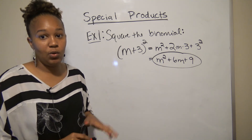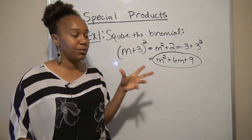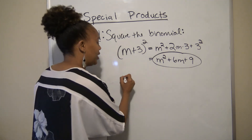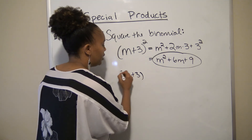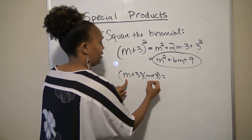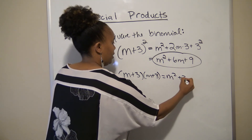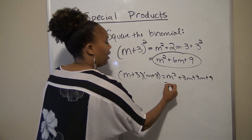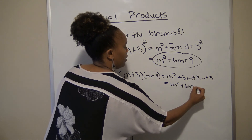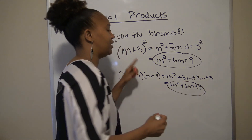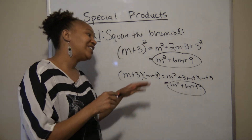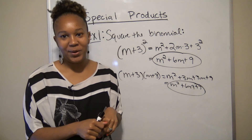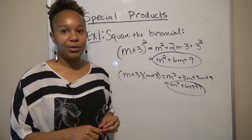If you can't remember the shortcut, you can always get to this answer by just multiplying (n + 3)(n + 3). That gives n × n = n², then 3n + 3n = 6n, plus 3 × 3 = 9, so n² + 6n + 9. I want you to try to remember the shortcut, but you can always fall back to multiplying it out.